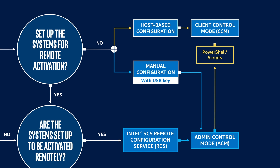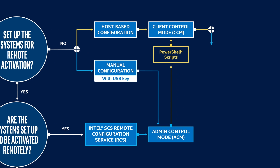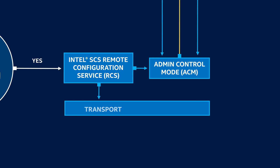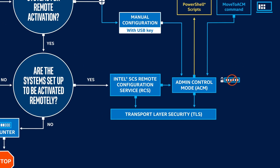Intel also provides PowerShell scripts that allow an endpoint to switch from admin control mode to client control mode as needed. Intel tools also include a move-to-ACM command for switching systems from client control mode to admin control mode. This feature is commonly used with systems with no wired Ethernet port, which are typically configured in client control mode at initial setup. A common practice for AMT deployments is utilization of transport layer security to set up a trusted connection between a remote management console and the endpoint being managed, typically required for admin control mode where user consent is not required.